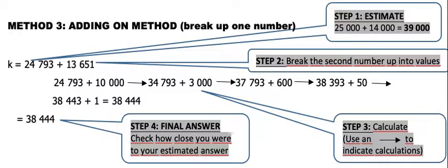Let's have a look at the adding on method. For step 1, we have to get our estimate answer by rounding the numbers off to the nearest thousand.